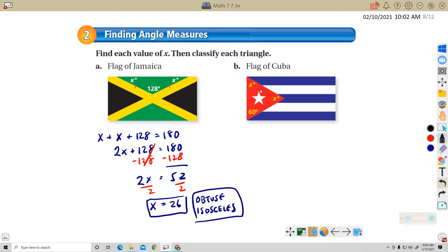On the Cuban flag, I've got x, x, and 60. So x plus x plus 60 equals 180. Simplifying the left side, 2x plus 60 equals 180. Subtracting 60 from both sides, 2x equals 120. Dividing both sides by 2, x equals 60.